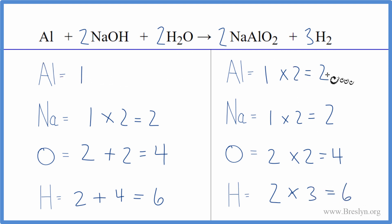And then the aluminum. We have one here and two here. Put a two in front of the aluminum. That gives us two. And we're done. This equation's balanced.